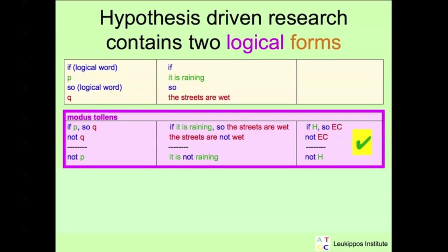For our hypothesis method, this means if hypothesis, so we can deduce an empirical consequence. We do not observe data corresponding to the empirical consequence and conclude that the hypothesis is not true. This is correct concluded if the data are correct measured.